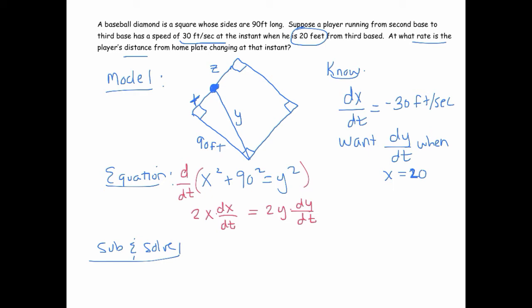So, this is at the instant x is, actually, you can divide 2 on both sides right now. Let's do that first. Let's just get rid of those 2's. So, when x is 20, we know dx dt is negative 30. And do we know y at this instant? Well, yeah, because we know x at this instant. This is at the instant x is 20.